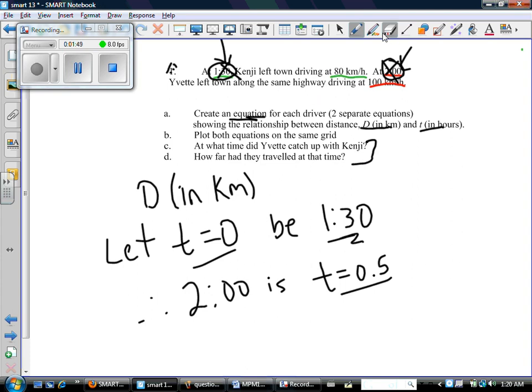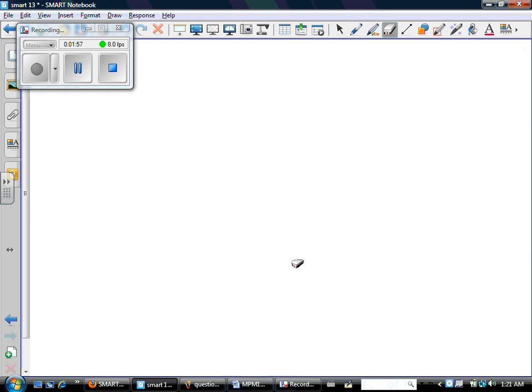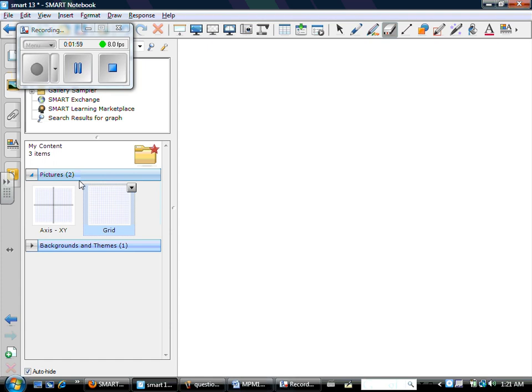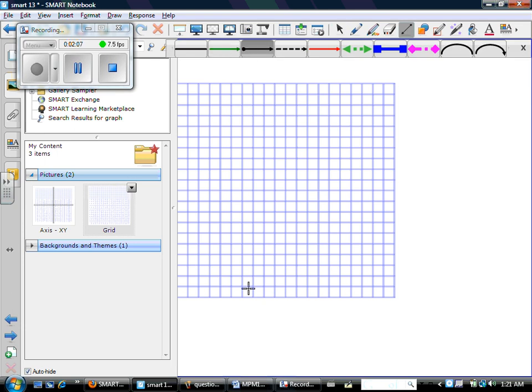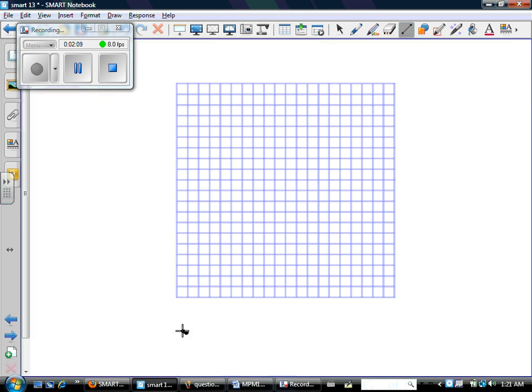Now, there's a lot going on in this question because you have different times, different speeds. So before I do anything else, I'm going to want to draw a picture because that's how I understand things best. So let me grab myself a piece of grid paper here. And we're just going to try to quickly get a feel for this question. So we're not actually going to try to graph beautifully. We're just going to get a feel for what's happening.